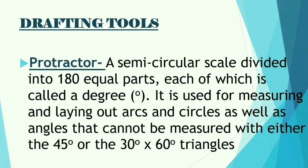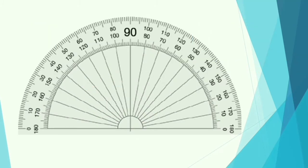Next is the protractor — a semicircular scale divided into 180 equal parts, each of which is called a degree. It is used for measuring and laying out arcs and circles, as well as angles that cannot be measured with either the 45-degree or the 30-60 triangles. So the protractor is used to measure angles.